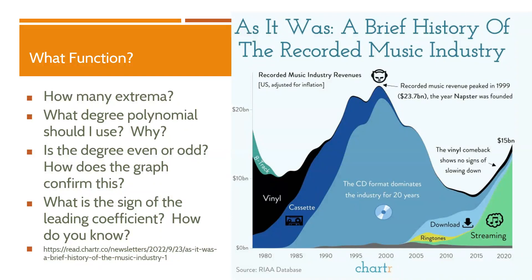I want to apply what we've been learning to real life, so I want to start by picking out where I think there would be extrema. I'm going to use a red pen. The first point I see right here is definitely a low value, so we'll call that a minimum — a relative minimum, because we aren't deciding if that's the lowest overall.